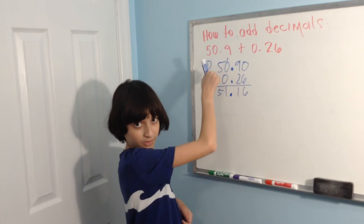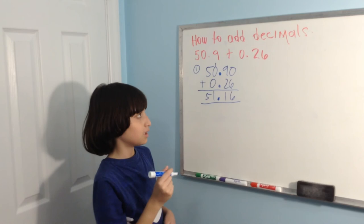1 plus 0 is 1. Bring down the 5, and that's the answer: 51.16.